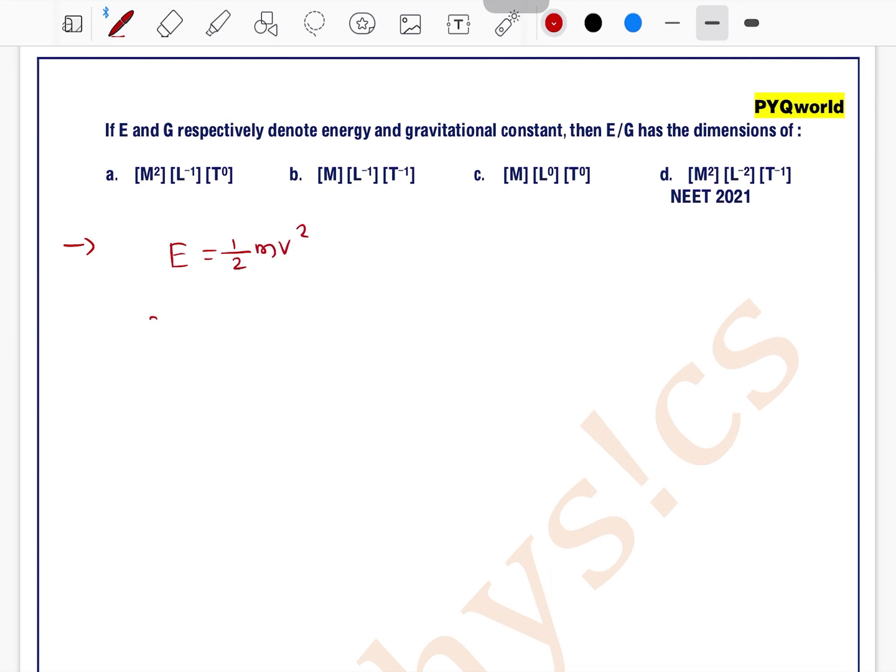We can find the dimension of energy using the formula 1/2 mv². The dimension of energy can be written as m¹l²t⁻². This is the dimension of energy.